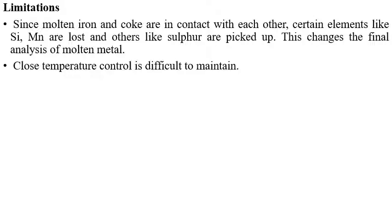Drawbacks of the cupola: since molten iron and coke are in contact with each other, certain elements like silicon and manganese are lost while others like sulfur are picked up, changing the final analysis of the molten metal. Close temperature control is difficult to maintain. This concludes the discussion on the cupola furnace, covering its working principle, important zones, figure, parts, advantages, and disadvantages.